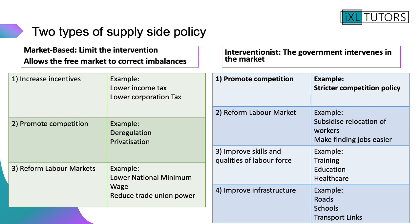There are two different types of supply side policy, and it's really important that you know the difference between both of them, because very regularly you're asked about either specific market-based or specific interventionist policies. A market-based supply side policy limits the intervention of the government and allows the free market to correct any imbalances. There are three examples: increasing incentives by decreasing income tax or lowering corporation tax; promoting competition through deregulation or privatisation; and reforming labour markets by decreasing the national minimum wage or reducing trade union power.